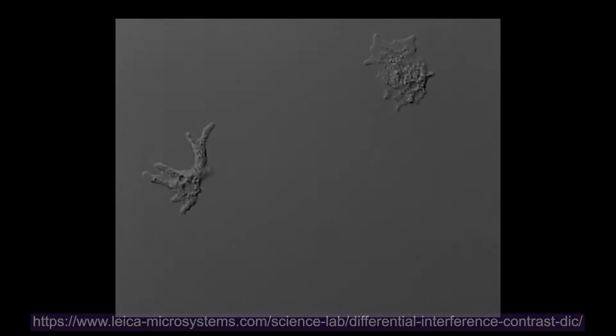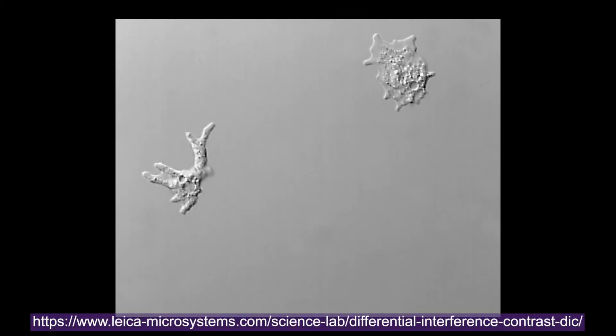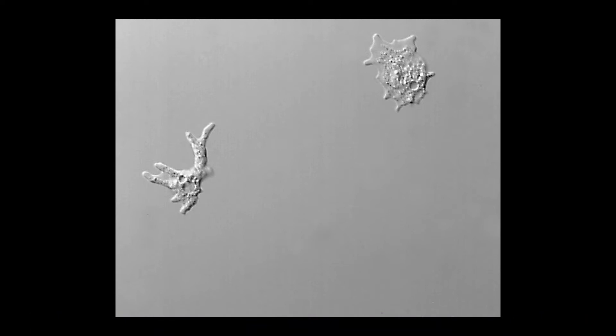Like phase contrast imaging, Differential Interference Contrast, or DIC, is used for viewing colorless and transparent specimens and live cells, where the object appears dark against a bright background.